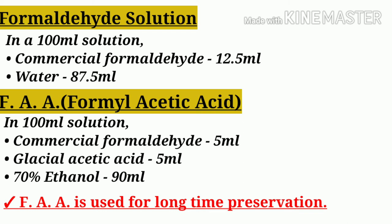Formal diet solution, also known as formalin solution, is prepared by taking commercial formalin — 12.5 ml of commercial formalin — and adding 87.5 ml of water to make up the solution.